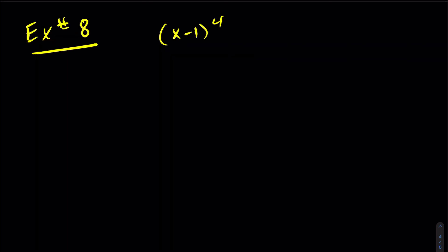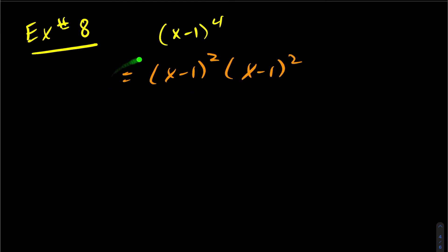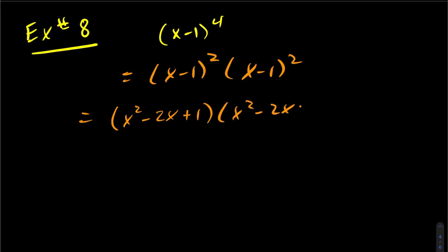Let's look at example 8. You'll notice this is to the power of 4, and our shortcut deals with powers of 2. What we can do is rewrite the power of 4 as a power of 2 times a power of 2 — using exponent rules, multiplying with the same base means adding the exponents, and 2 plus 2 is 4, so these are equivalent. We treat these as two separate problems and multiply the results: square the first, first times second times 2, square the last — obviously both squares give the same result: x squared minus 2x plus 1.